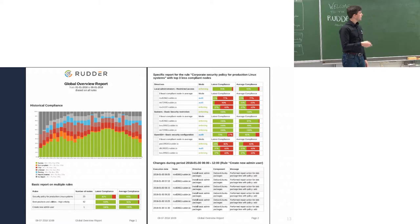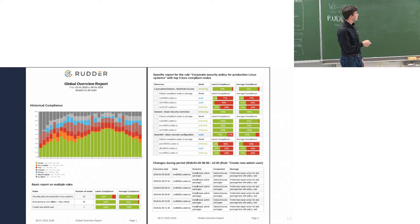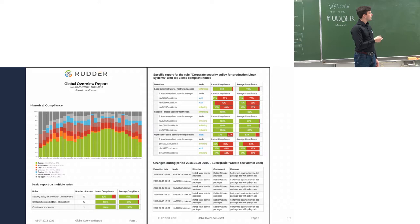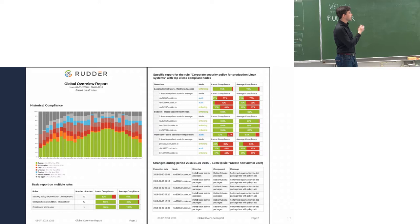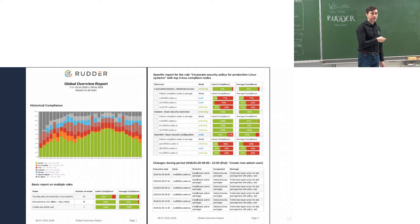Here's what it looks like: you first have the history of compliance — this one is not very good, I hope you don't have this — and here is the history of what has changed on your platform. You can filter it so you don't have to include everything, because it can be very long, but you can filter the interesting parts into your report.